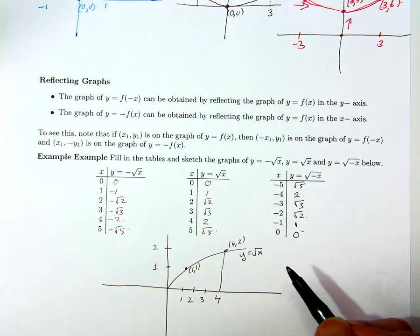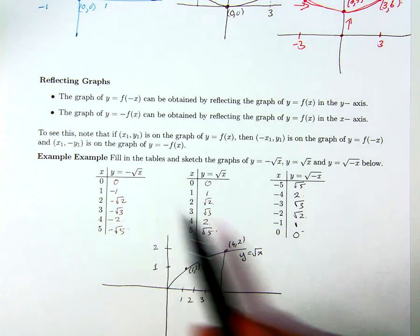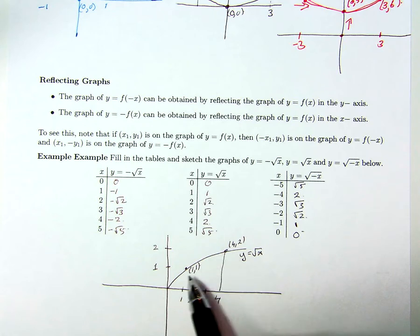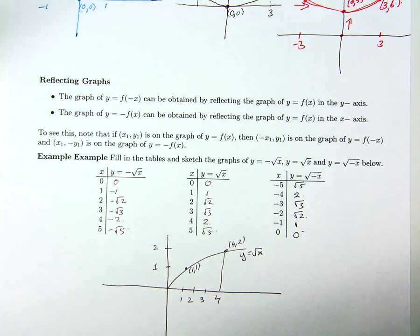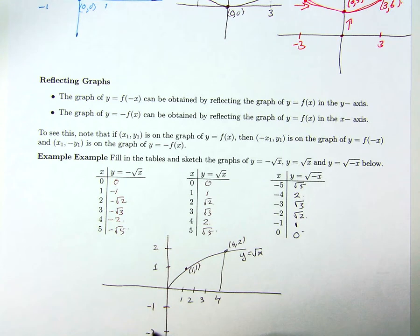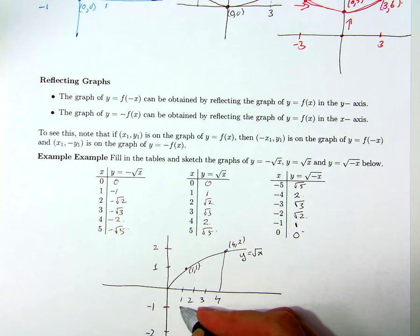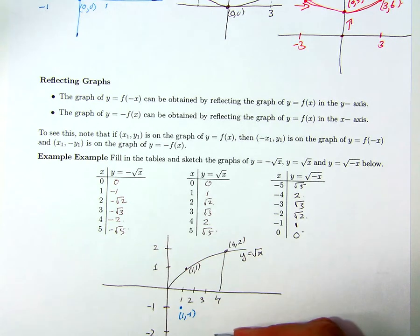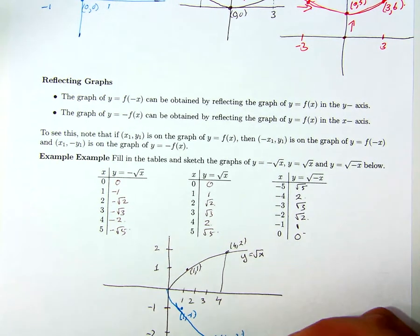And these points in between. Now when I take the graph y = -√x, I get the same x-values, but the y-values become negative. So the point (1, 1) gets switched to (1, -1). The point (4, 2) gets switched to (4, -2). The graph basically just gets reflected in the x-axis.